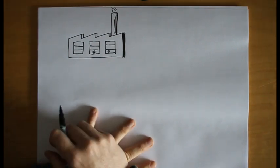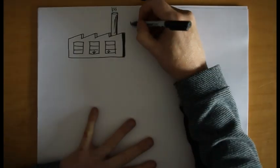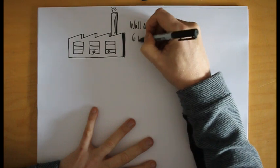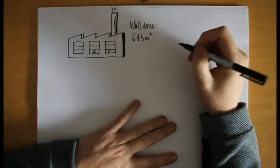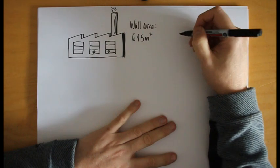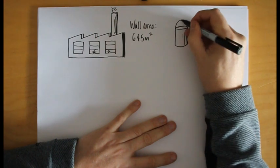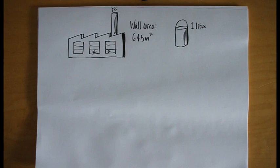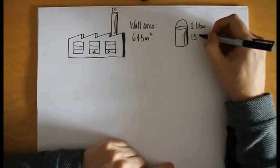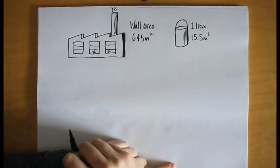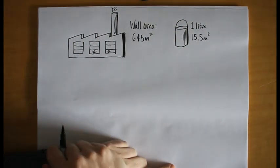Let's start with a factory. We have our factory and we're told that there's an area of wall inside which needs to be painted. We're also told that the paint that we need to buy comes in one litre tins, and the manufacturers tell us that each tin is capable of covering roughly an area of 15 and a half square meters. So we're being asked to give an estimate of how much paint we need to order.